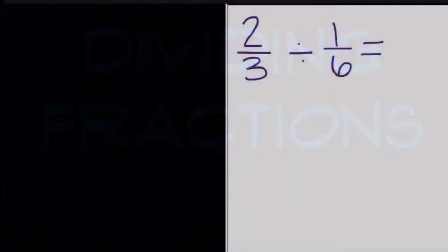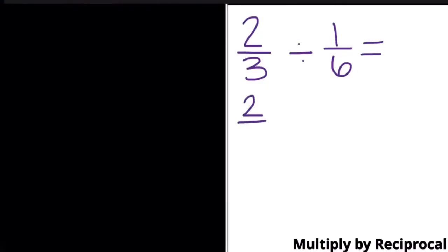In the problem two-thirds divided by one-sixth we're going to start by multiplying by the reciprocal. We often call this keep change flip because we keep the first fraction, we change division to multiplication, and then we use a reciprocal or the flip of the second fraction.